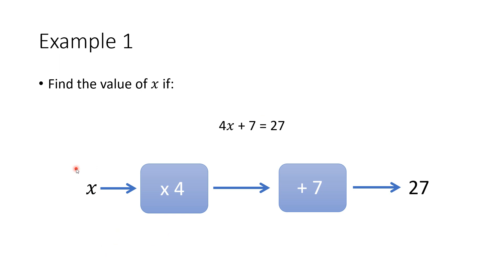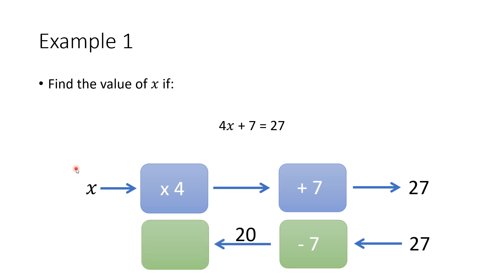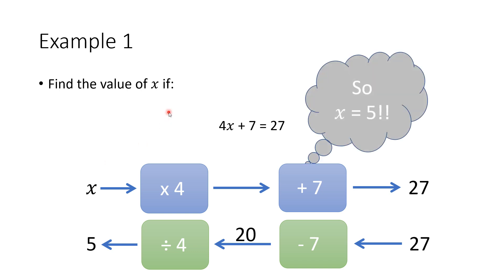In order to find the value of x, we now have to work backwards. We start with 27, do the opposite of add 7, which is subtract 7. 27 take away 7 gives us 20. Then we do the opposite of times by 4, which is divide by 4. 20 divided by 4 gives us 5. Therefore x is equal to 5.